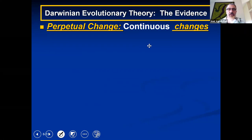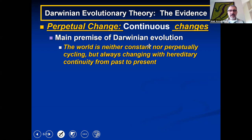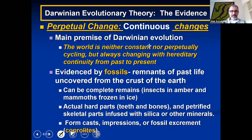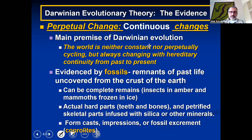Darwin's theory of evolution involves perpetual change — changes constantly occur and don't stop. The main premise is that the world is neither constant nor perpetually cycling, but always changing, with continuity from past to present, evidenced by fossils. Darwin collected and studied fossils, and based on fossil records he developed these ideas. Fossil evidence includes complete remains of insects in amber, mammoths frozen in ice, and hard parts like teeth and bones, as well as petrified skeleton parts infiltrated with silica or other minerals.